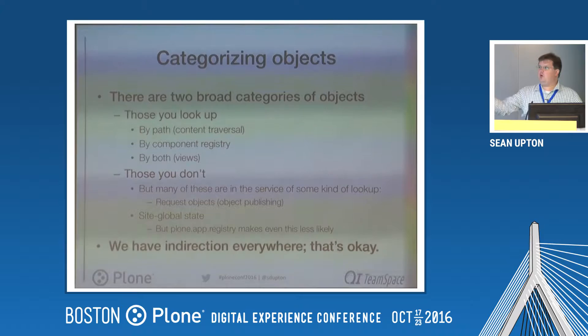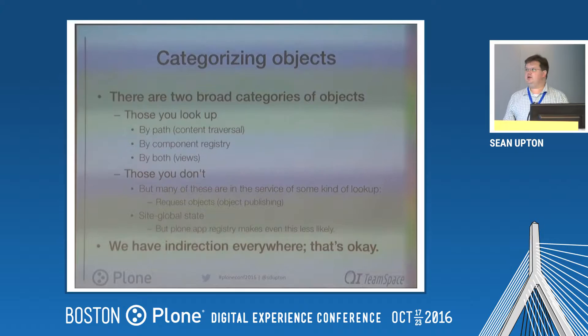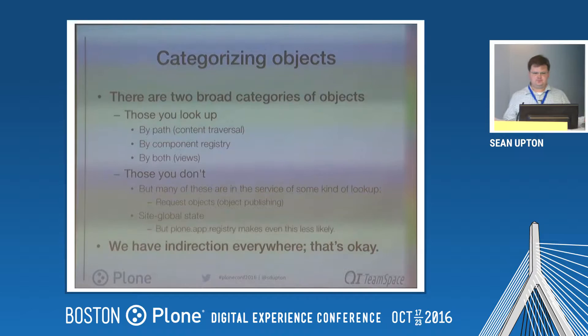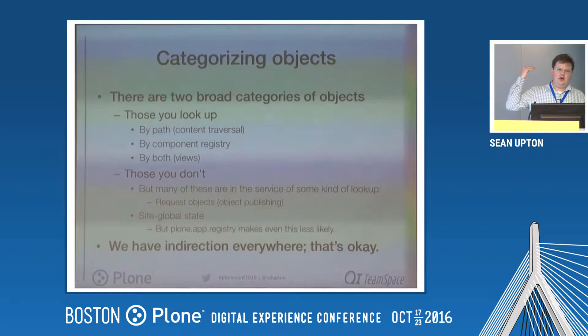When I say 'look up,' we've done this before — we have object publishing, we've looked up components by path. That's what Zope and Plone have done before there was any component architecture. Doing the same thing by component registry is a different way of looking up — more flat, solving a different problem. Or you might do something like looking up something by traversal and a component registry, which is what views are doing. There are certain kinds of objects you don't need to look up, but they're a minority — things like request objects are in the service of a lookup but are just created on the fly.